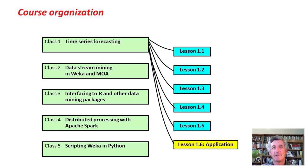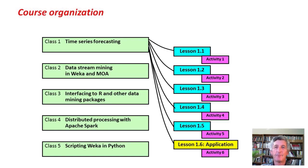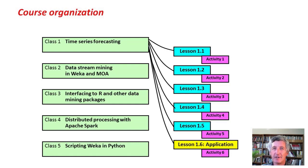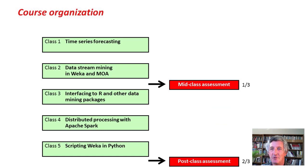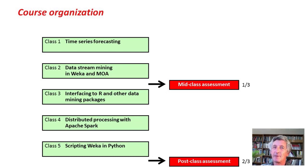Within each class there are six lessons. Each lesson is a brief YouTube video, five to ten minutes, followed by an activity where you actually get to use WEKA to do things yourself. This is where you do your real learning. The last lesson of each class shows how WEKA has been used in a real application. To get a certificate, you need to do the mid-class and post-class assessments, worth one-third and two-thirds of the credit respectively. The activities are not required for assessment but are strongly recommended.